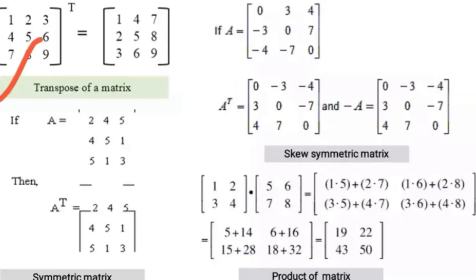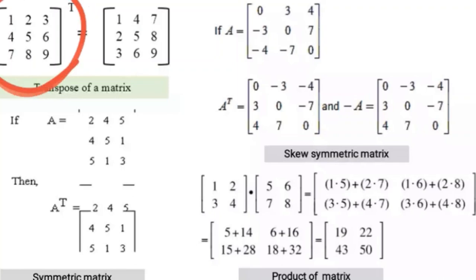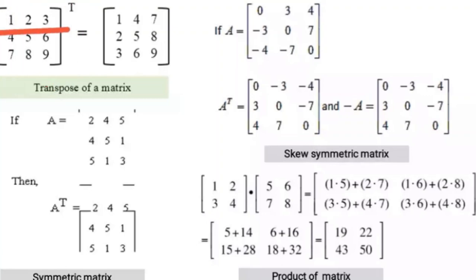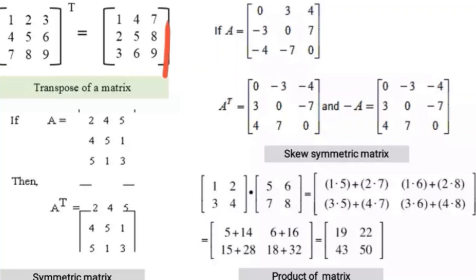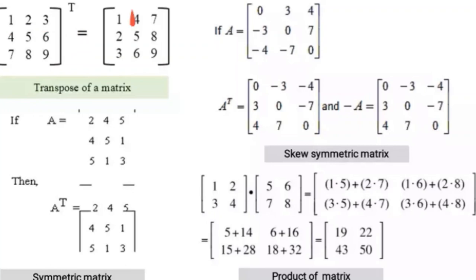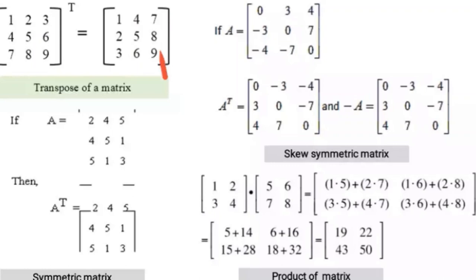Here is an example of transpose. The matrix has values 1, 2, 3, 4, 5, 6, 7, 8, 9 — a three by three square matrix. In the transpose, the first row 1, 2, 3 is converted into the first column; the row 4, 5, 6 becomes the second column; and 7, 8, 9 becomes the third column. So the transpose simply changes rows into columns.